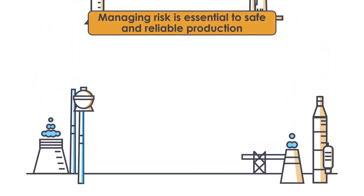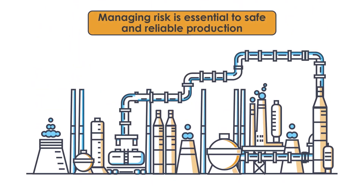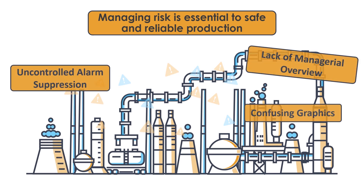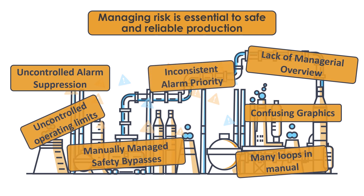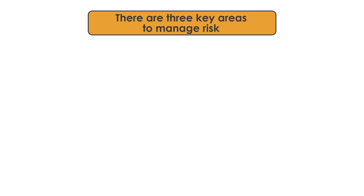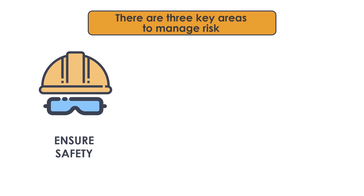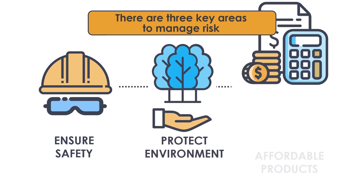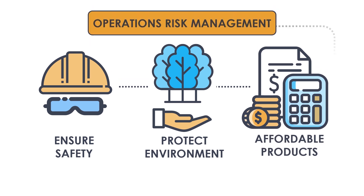In operating production facilities such as a refinery, chemical plant, or power plant, uncontrolled changes can cause significant issues and lead to incidents that endanger people, affect the environment, and impact production. There are key areas to focus on to manage operational risk: companies must ensure safety of people, protect the environment, and reduce costs to be competitive in the marketplace.